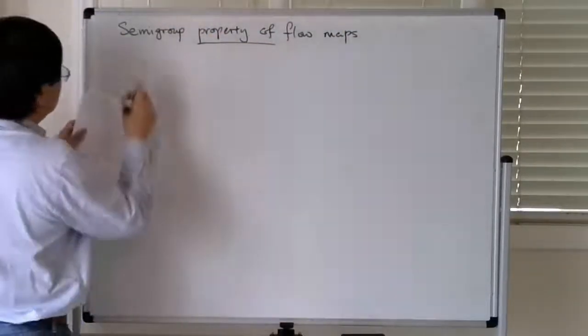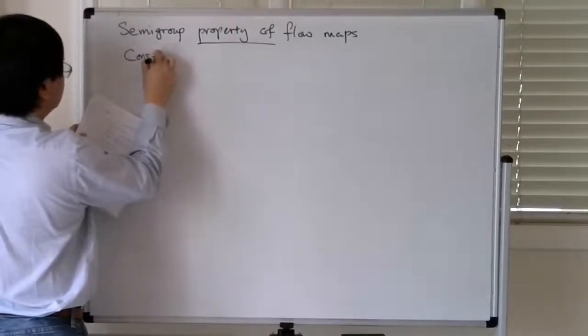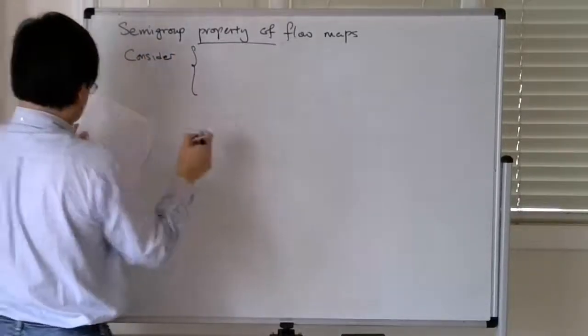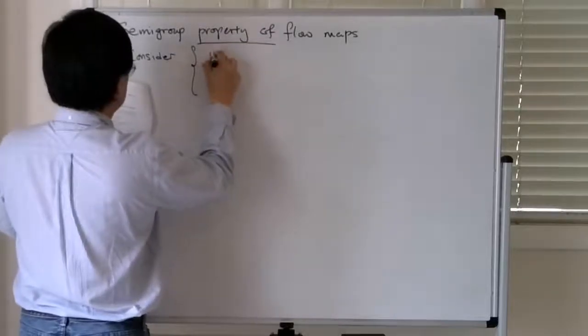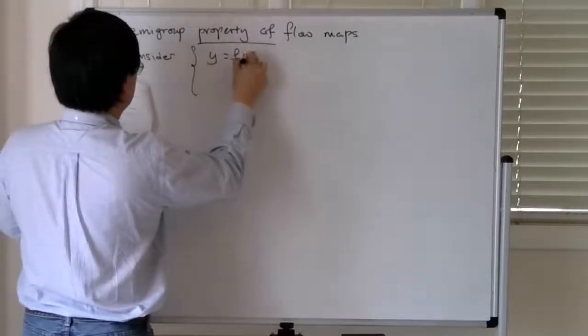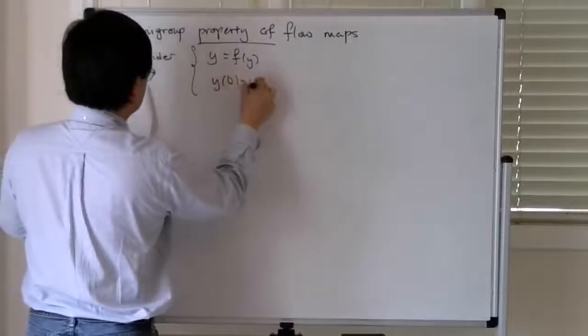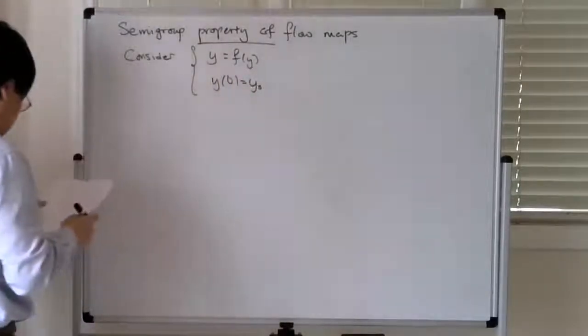So again, you consider an initial value problem where y dot equals f of y, and y at time 0 is y0.